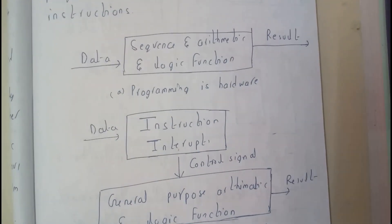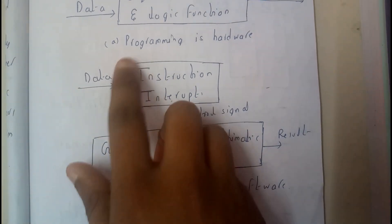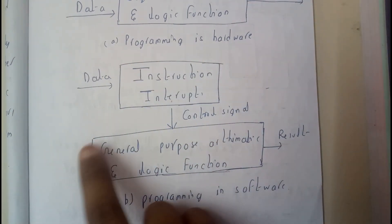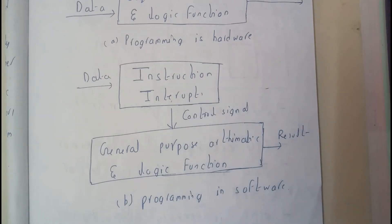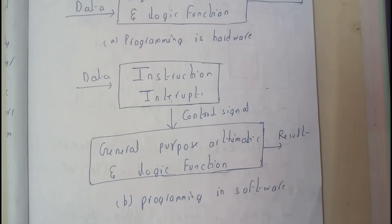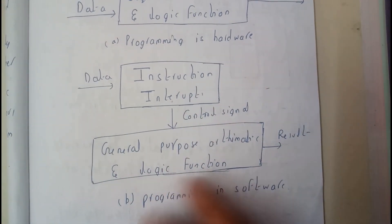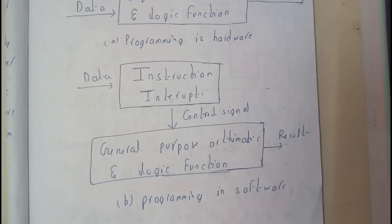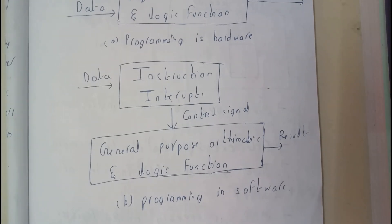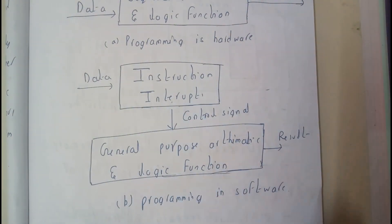Whereas programmed in software, if we do the programming in software, the data will be given to instruction interpreter and then this generates a control signal that you need to do addition, please perform addition. And that signal will go through this general purpose arithmetic and logical function, and that will do the process and generate the result. So this is how the software came into use. This is better than hardware programming. This will be the extra part but it's going to help us a lot.